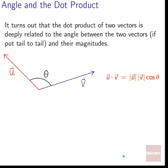It turns out that the dot product of two vectors is deeply related to the angle between the vectors and their magnitude. To talk about the angle between two vectors, we have to put them tail to tail. Once they're tail to tail, we can talk about the angle theta between them. It turns out that u dot v equals the length of u times the length of v times cosine theta.